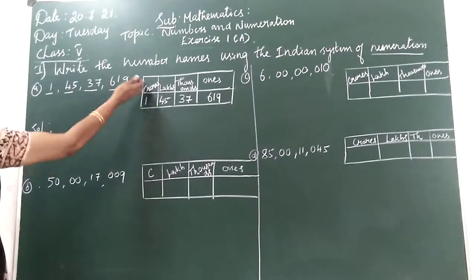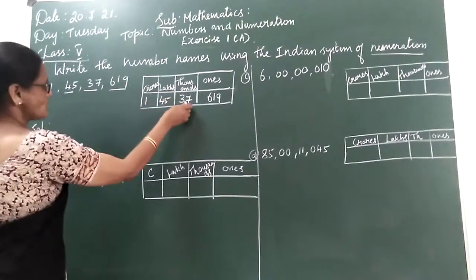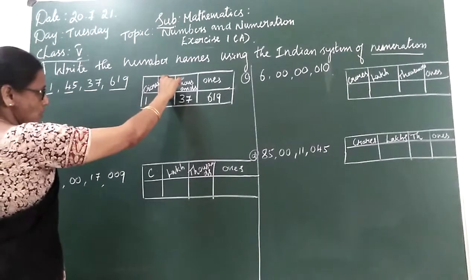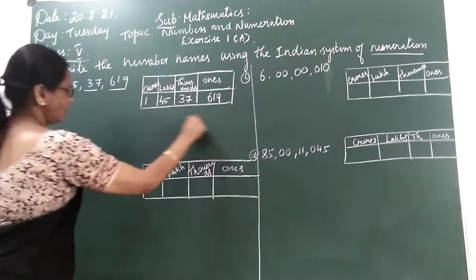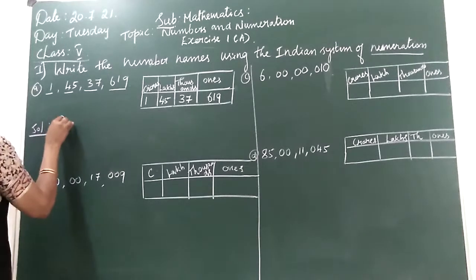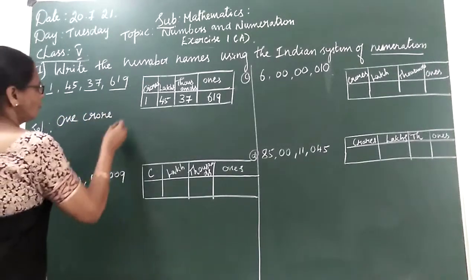Now you can write easily children number names. 1 crore 45 lakhs 37,619. Suppose we enter the place value chart. Then you write the number names using the Indian system. So we start right now. 1 crore 45 lakhs.